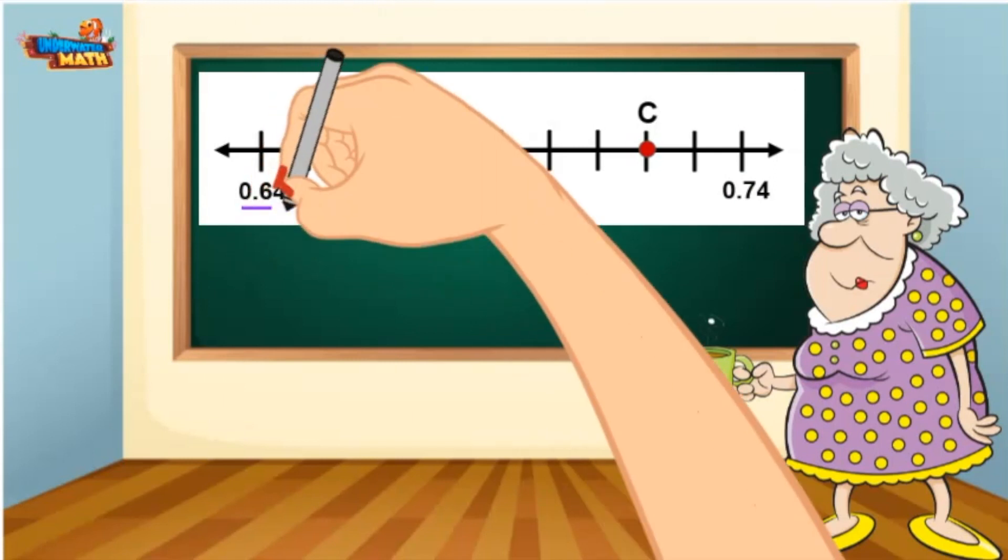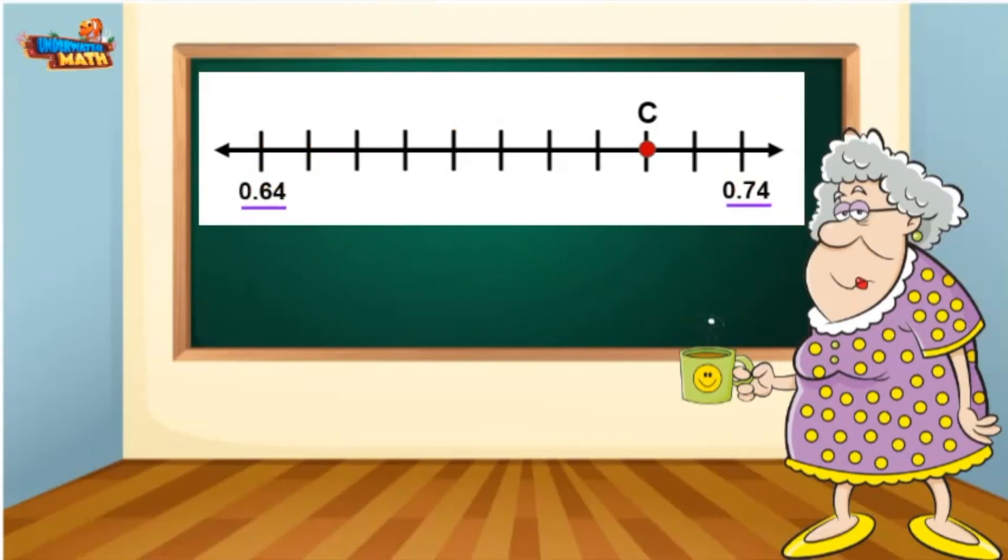It starts in a weird place at 64 hundredths and ends at 74 hundredths, but I've seen it all today. Let's find the decimal for point C: 64 hundredths, 65, 66, 67, 68, 69, 70, 71, and 72 hundredths.